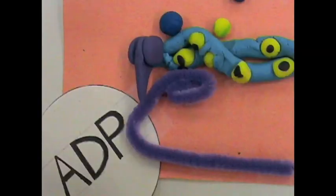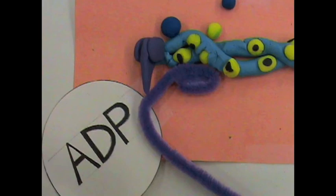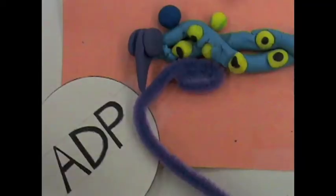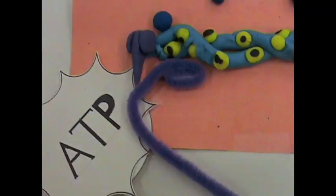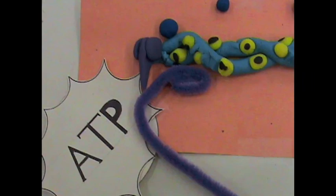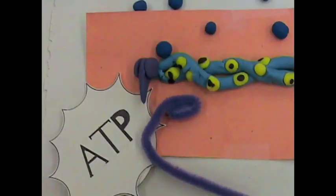The power stroke occurs causing the cross bridge to rotate and release the ADP. As the cross bridge rotates towards the center of the sarcomere it slides the thin filaments past the thick filaments. When the thin and thick filaments slide over each other it causes the muscle to contract.